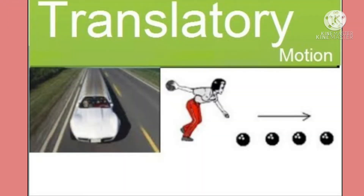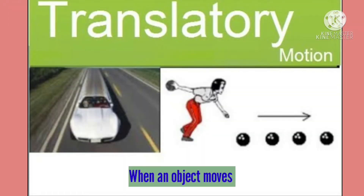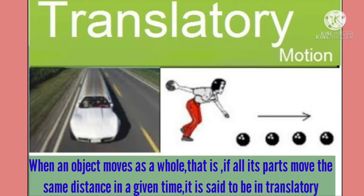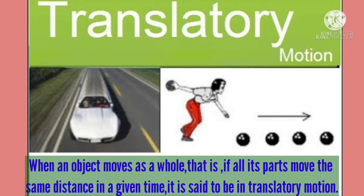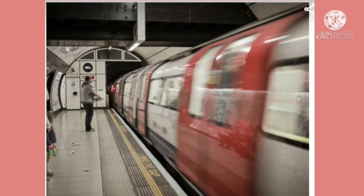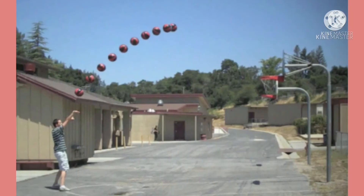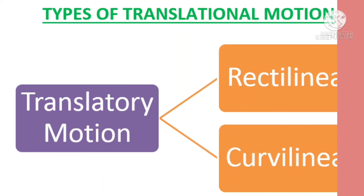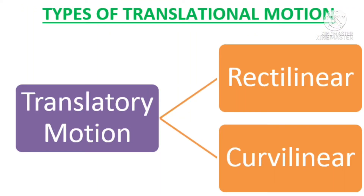First, translatory motion. When an object moves as a whole — that is, if all its parts move the same distance in a given time — it is said to be in translatory motion. A train moving on the track, throwing of a ball, opening of a door are some examples of translatory motion. Translatory motion is of two types: rectilinear and curvilinear motion.